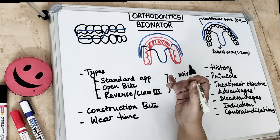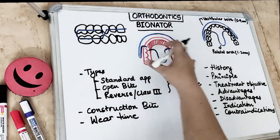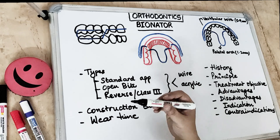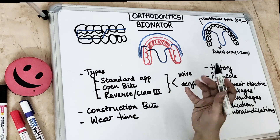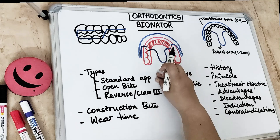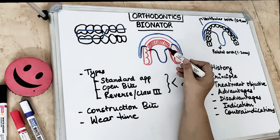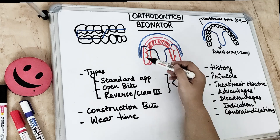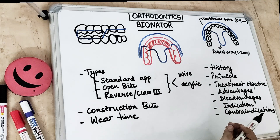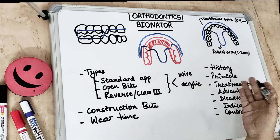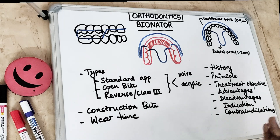All the pictures you are seeing are of the standard type of Bionator. We will also study the open Bionator and the reverse type of Bionator, which is used in class 3 cases. The standard appliance is usually used in class 2 division 1 cases. All Bionators have two components: the wire component, seen in blue, and the acrylic component, seen in red in the diagram. We will also study the construction bite and the wear time, history, principles, treatment objectives, advantages, disadvantages, indications, and contraindications.